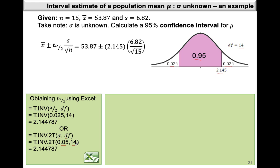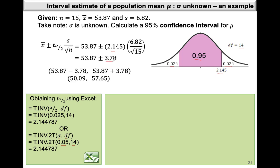Our formula is going to be 53.87 plus or minus 2.145 times 6.82 over the square root of 15. We find the margin of error as 3.78. So our interval will be 53.87 minus 3.78 as the lower value, and 53.87 plus 3.78 as the upper value, giving us an interval of 50.09 to 57.65.